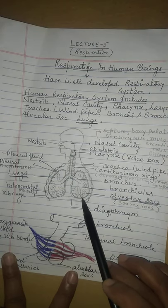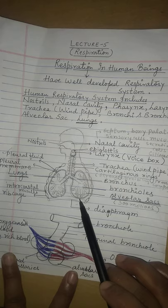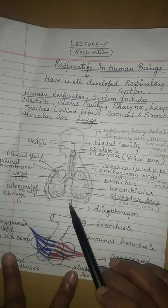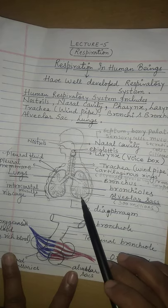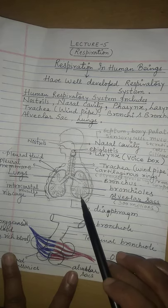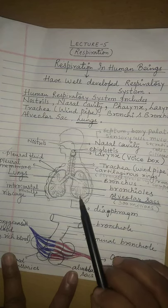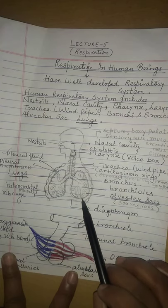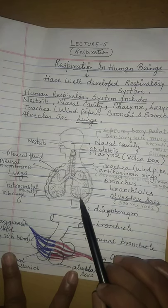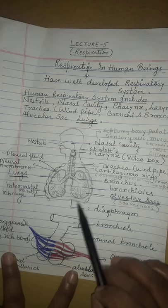The respiratory gases — oxygen and carbon dioxide — are exchanged at the alveolar sacs. Oxygen from the air passes into the blood, and carbon dioxide from the blood passes into the alveolar sacs, which is where the exchange takes place.